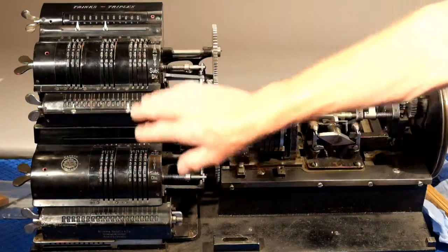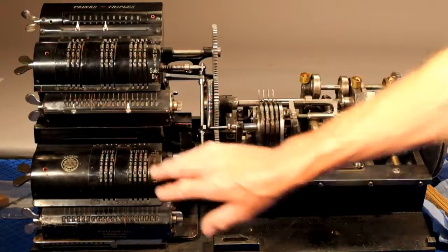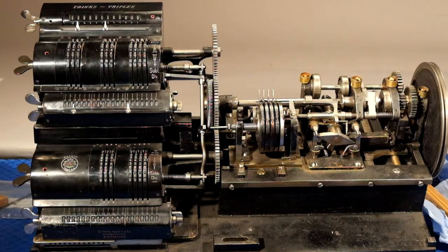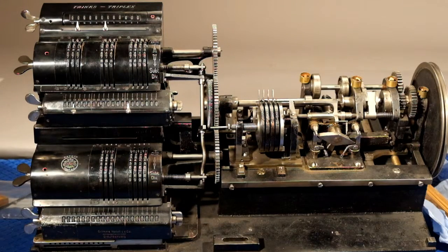The calculators here are Brunsviger machines. The rest of the machinery, according to the description, was made here in Stockholm in a small mechanical workshop.